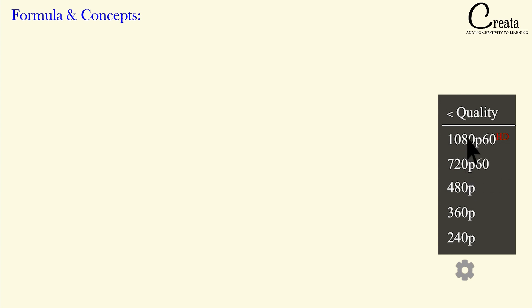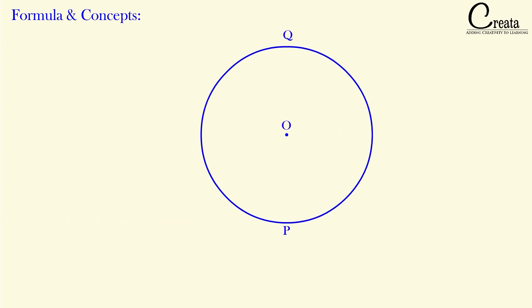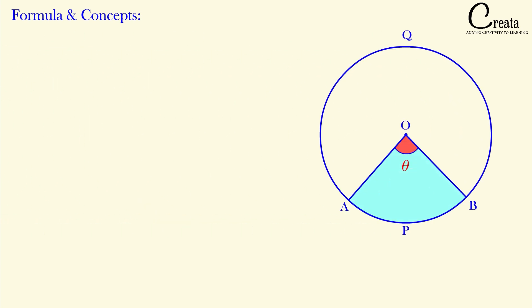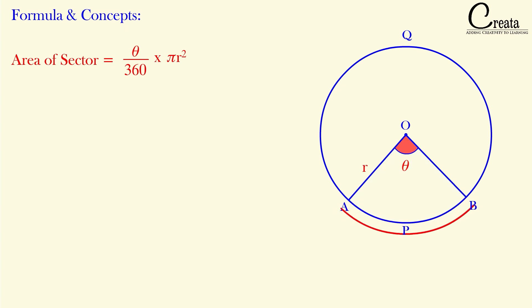Before starting the lecture, let's understand some of the formulas and concepts related to the chapter. This is a circle and this is the sector. Sector is the region between the two radii and the arc. The area of the sector of angle theta is (theta / 360) × π r². Here theta is this angle and r is the radius. Further, AB is the arc — a portion of the complete circumference of the circle.